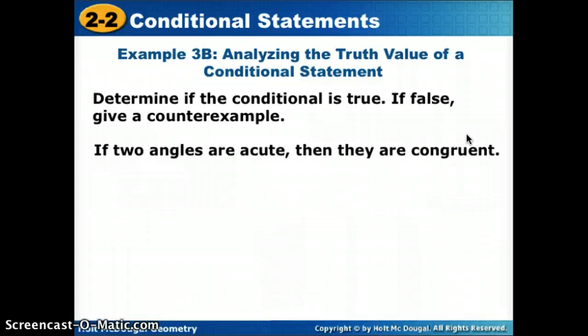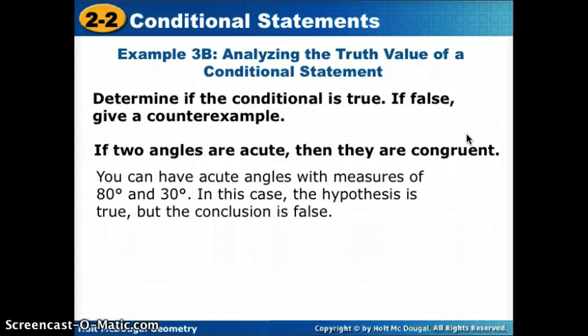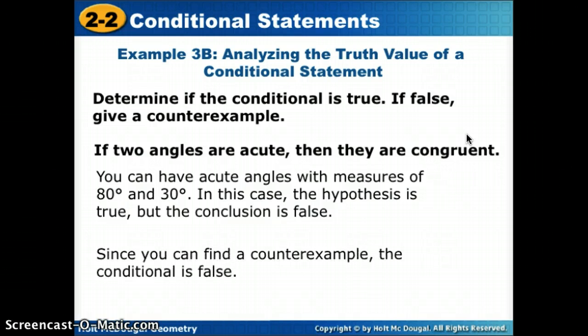'If two angles are acute, then they are congruent.' If we do have two angles that are acute, can we find a time where they are not congruent? Yes — we can have two acute angles, so the hypothesis is true, but they need not be congruent. For example, 80° and 30° are both acute but not the same. The hypothesis is true but the conclusion is false, so we found a counterexample — the conditional has a false truth value.